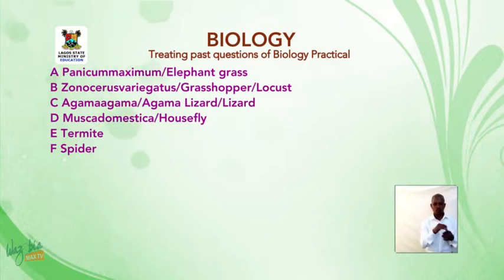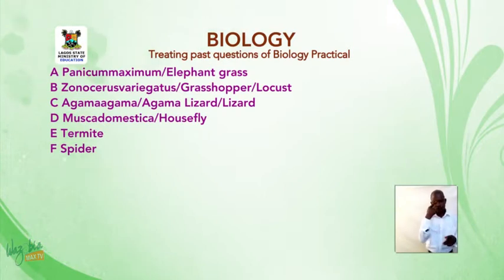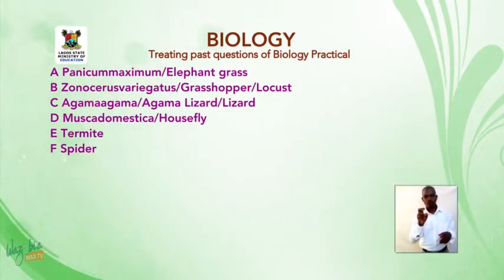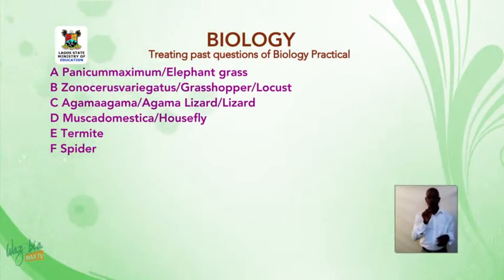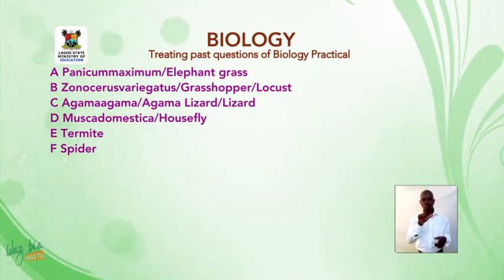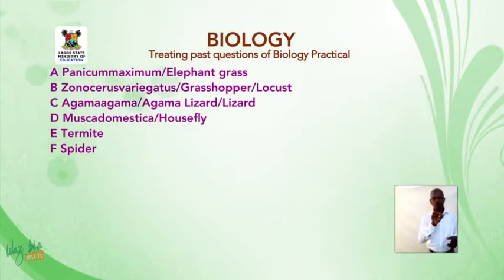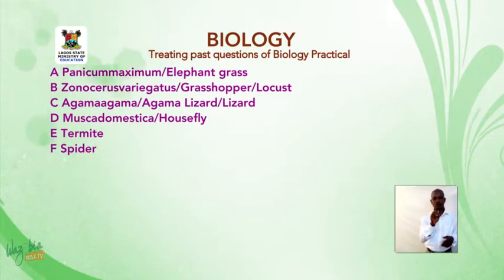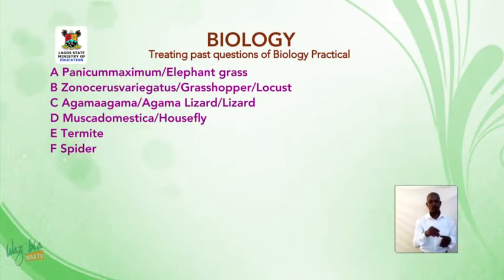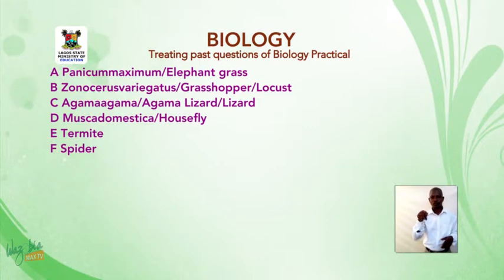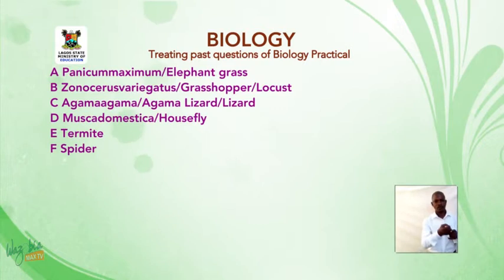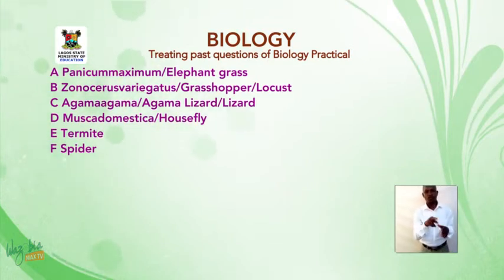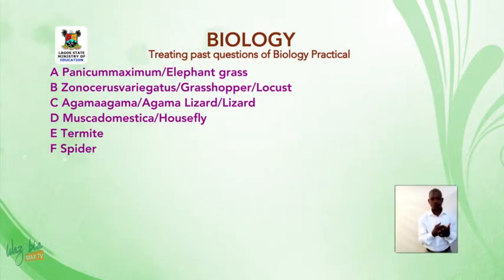The examiner may ask the teacher to provide any of these three options. Specimen B could be Sunozeros, grasshopper, or locusts. C is agama agama, agama lizard, or lizard — any of the three will be marked. D is musca domestica or housefly. E is termite. F is spider. You may write the biological name or the common English name; either is acceptable.